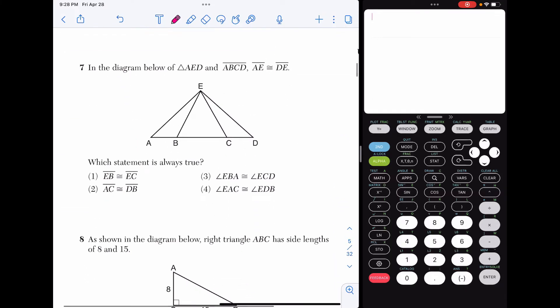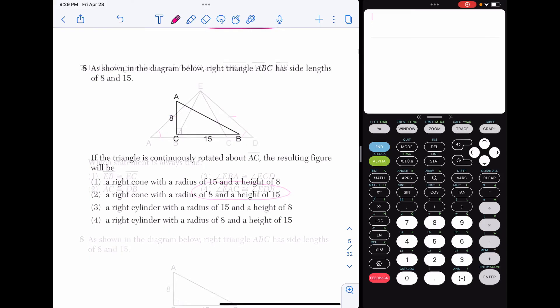Number seven, in the diagram below of triangle AED and line segment ABCD, AE is congruent to DE. Based on that, I know that I have an isosceles triangle here, and I know that these two angles are going to be congruent to one another. And right off the bat then, for this problem, I know that choice four is true. Using isosceles triangle theorem, angle EAC is congruent to angle ED.